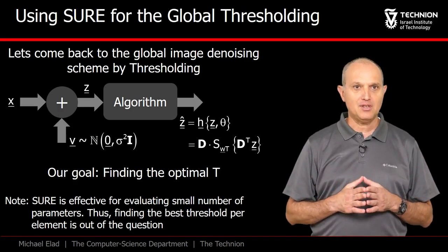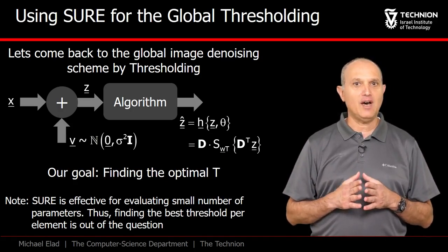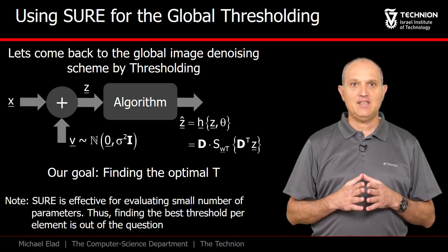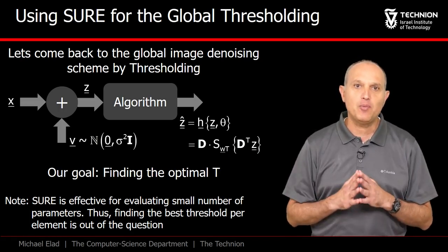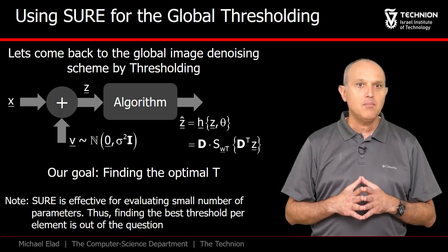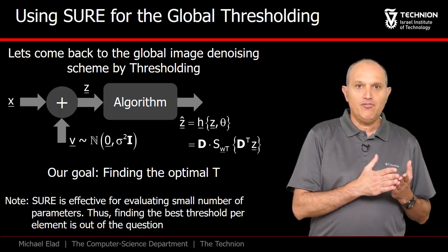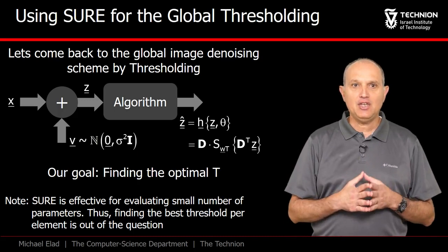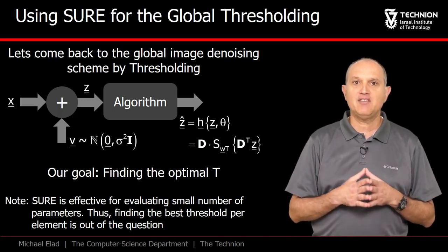This is a good time to mention that SURE is valid only for Gaussian noise and relevant as an effective method only when trying to set few parameters. Why? Because when only few parameters are needed, the expectation we conveniently removed remains a valid approximation.